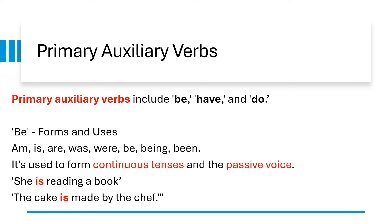Primary auxiliary verbs include be, have and do. Let's break these down. The verb be has several forms: am, is, are, was, were, be, being and been. It's used to form the continuous tenses and passive voice.